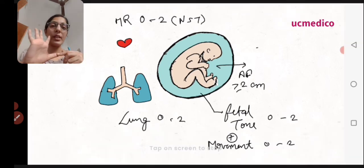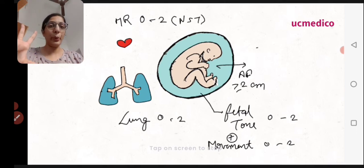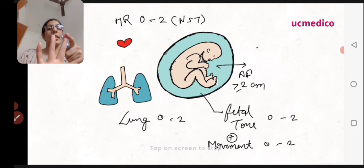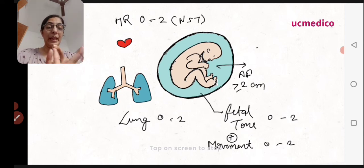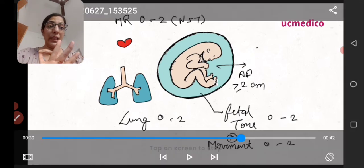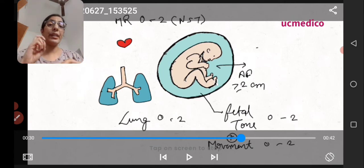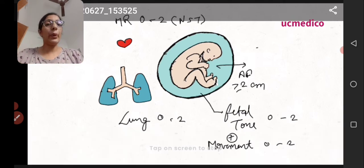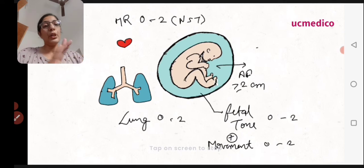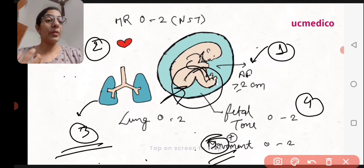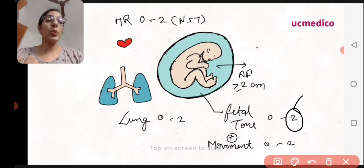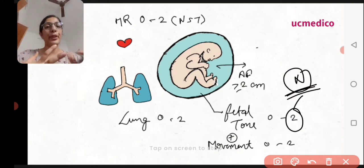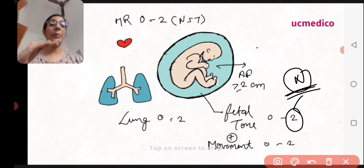So the five components are: fetal movement, fetal tone, fetal heart rate, fetal respiration or breathing movement of the lung, and amniotic fluid index. For each component, we assign only two possible scores — either zero or two. A score of two indicates that the component is normal.